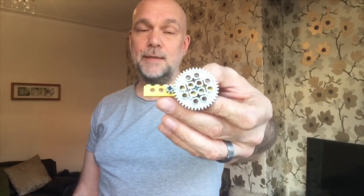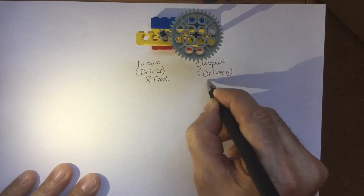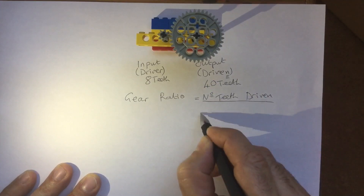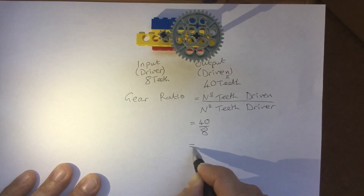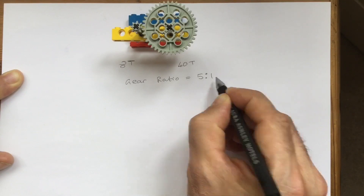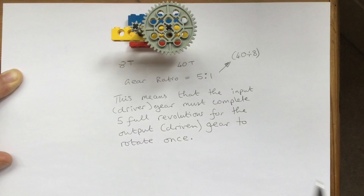Gear ratio is a comparison of how many times each gear completes one full turn, and it depends on how many teeth each gear has. At GCSE you need to calculate gear ratio using the formula: gear ratio equals the number of teeth on the output (the driven) divided by the number of teeth on the input (the driver). That's 40 divided by 8, giving a ratio of 5 to 1. Because the big gear has five times as many teeth, the small gear needs to turn around five times just for the big gear to turn once.